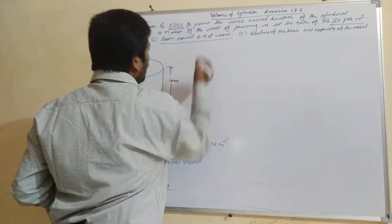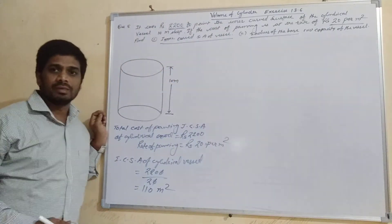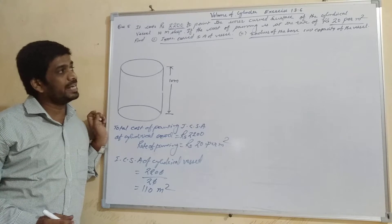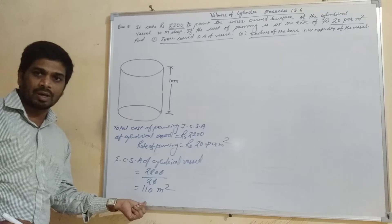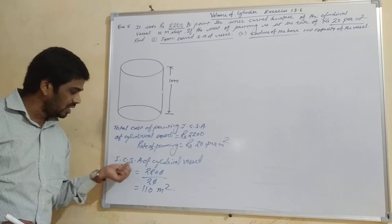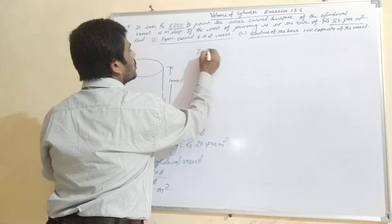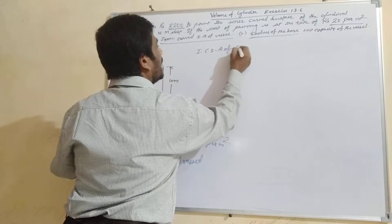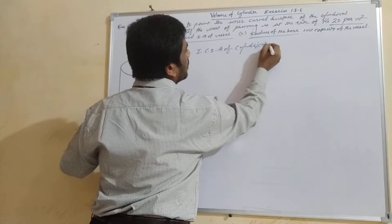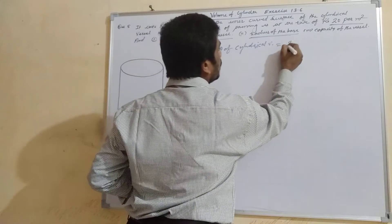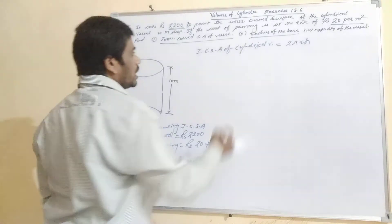Now we have to find the second part: the radius of the base. For finding the radius of the base, we can use the value of the inner curved surface area, which equals 110. We will write: inner curved surface area of the cylindrical vessel equals 2πRH.